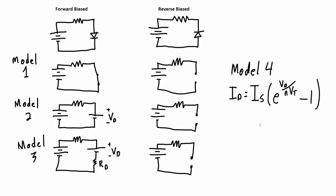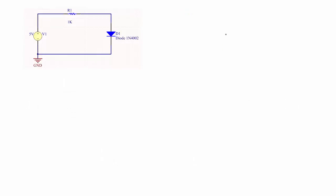Model 4 is typically done using simulation software, where the current through the diode is modeled by Shockley's equation. The simulation tool will approximate the diode current and diode voltages. What I'd like to do now is examine this circuit and do some analysis using all four different models.